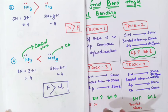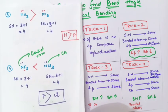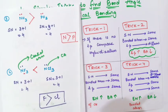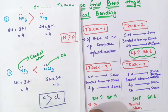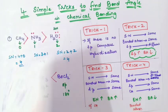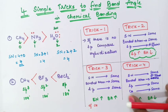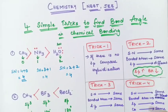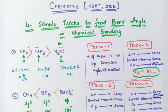So this is how we use the four tricks to easily find and compare bond angles between molecules. I hope these tricks are very useful to you. If you have any doubts, write in the comment box. Please like the video and share with your friends. I will meet you in the next video. Bye bye.